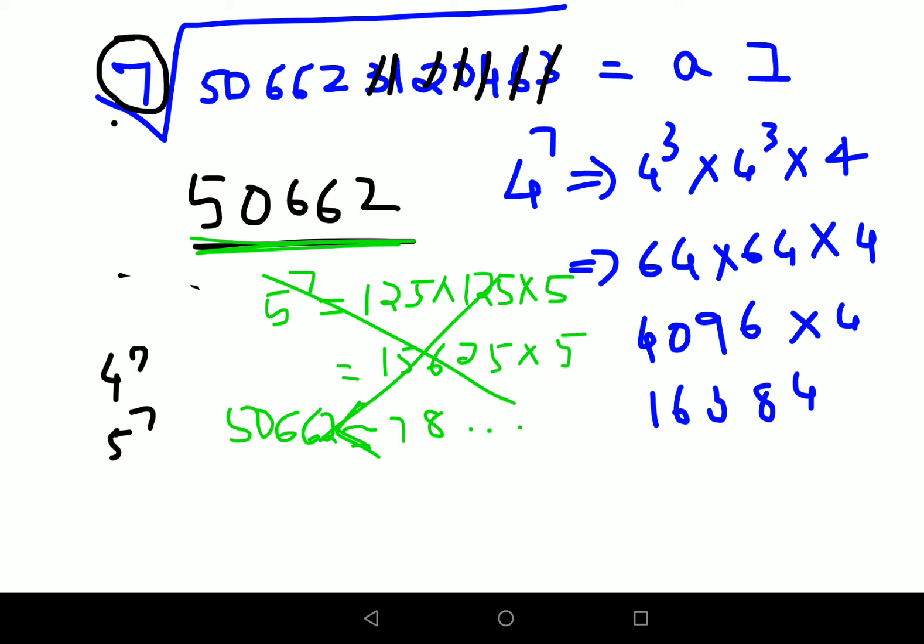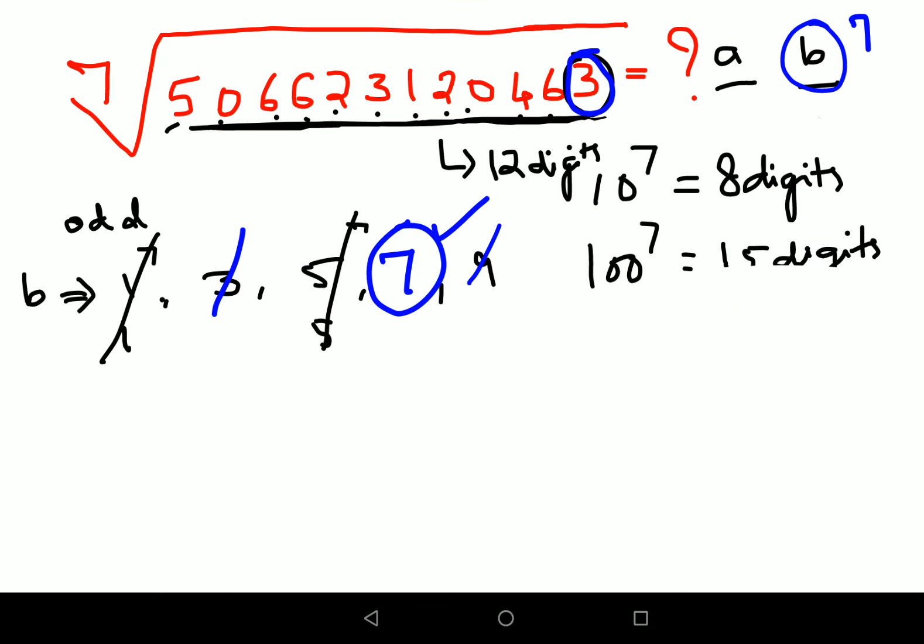So from here, what I can say, value of A is nothing but 4. Therefore, you can go back to your question and I can say that the answer for this one is nothing but 47. 7th root of this particular big number is nothing but 47.